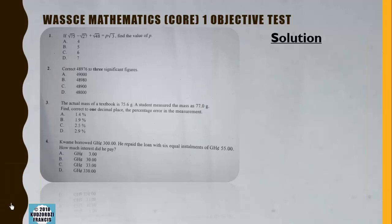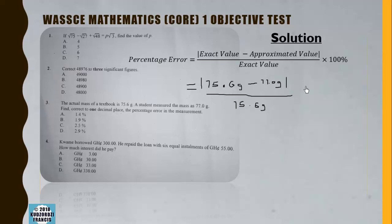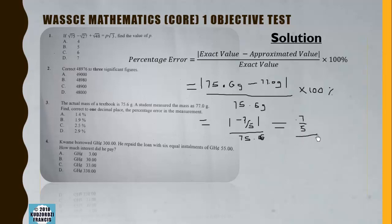We want to find the percentage error. Percentage error = |exact value - approximate value| / exact value × 100%. That is |75.6 - 77.0| / 75.6 × 100% = |−1.4| / 75.6 × 100%, which gives 1.4/75.6 × 100%.